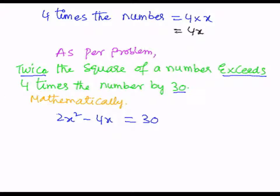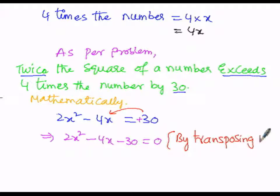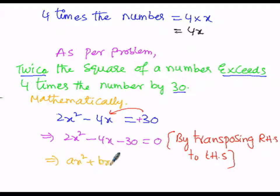The next logical step: transposing the right-hand side term, which is +30, over to the left-hand side gives us 2x² − 4x − 30 = 0. Let us now compare this with the general form ax² + bx + c = 0.